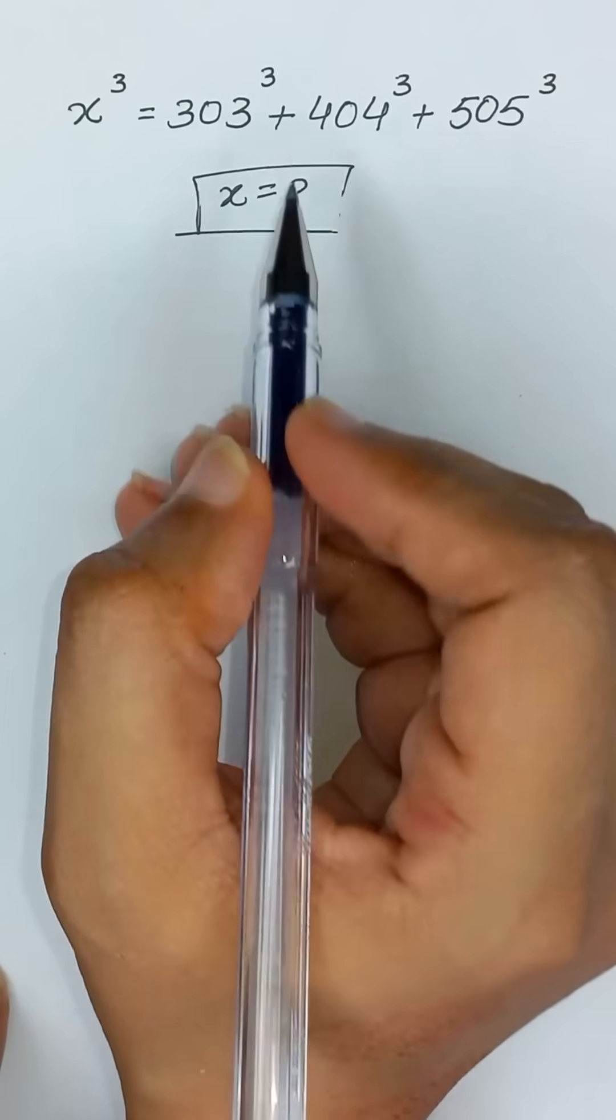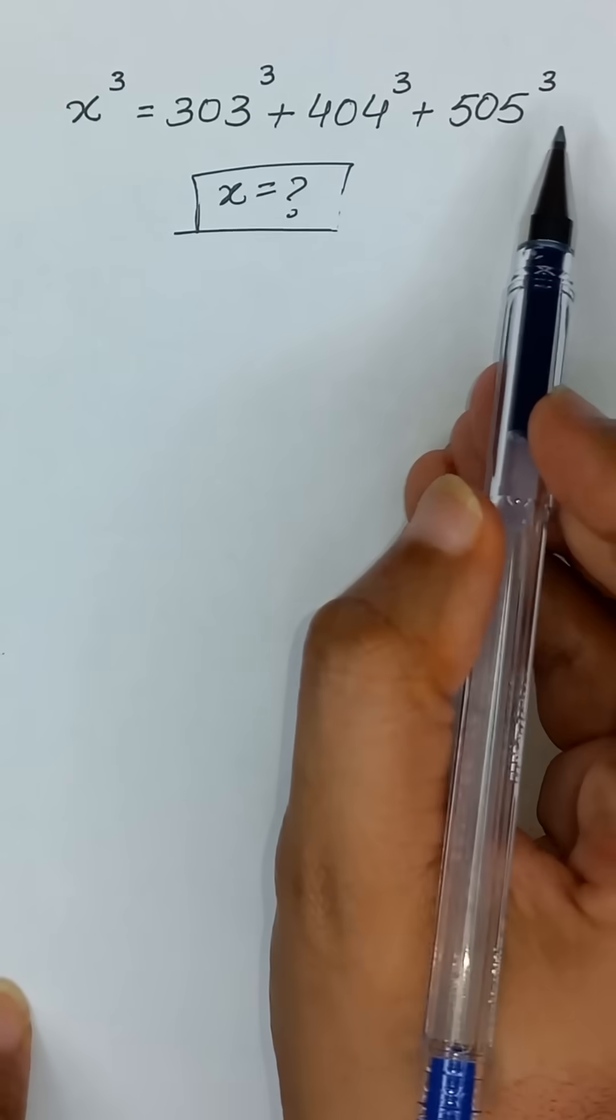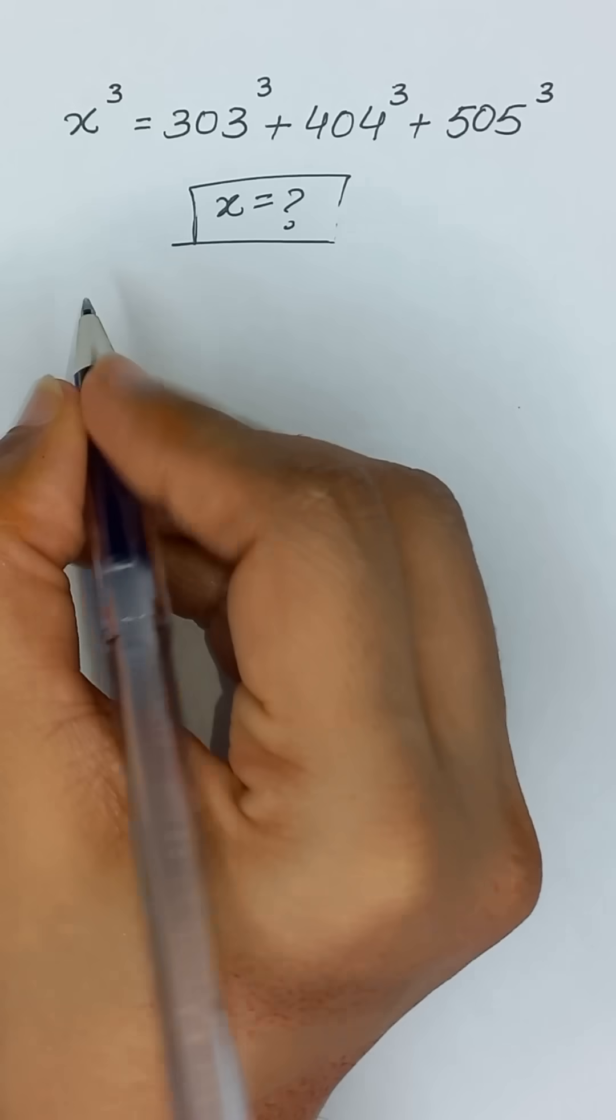x cube is equal to 303 cube plus 404 cube plus 505 cube and we will solve for x.